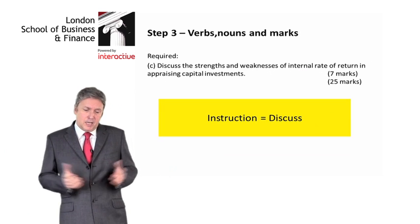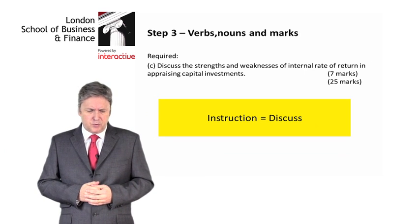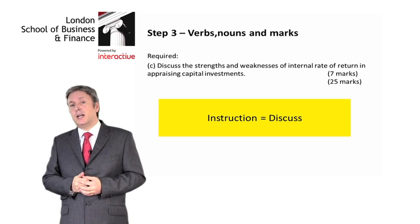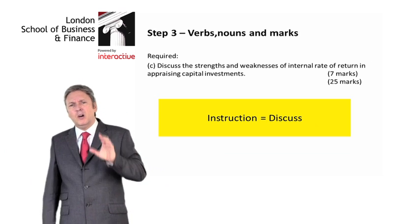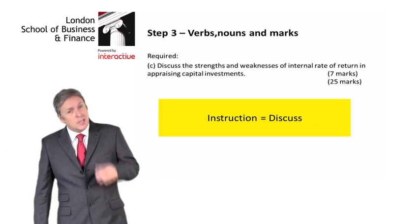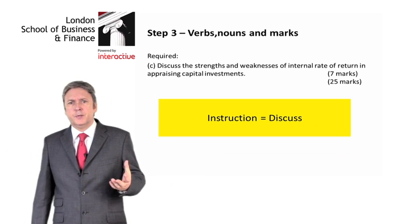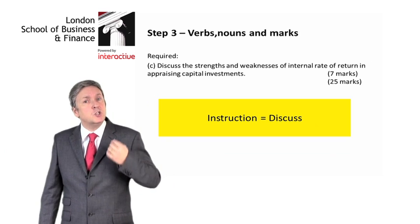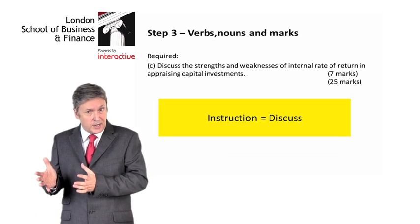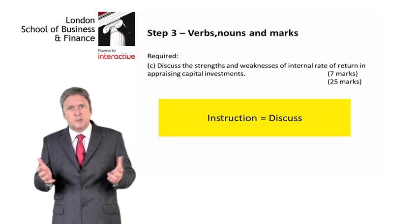Step 3 — this is where things get slightly more exciting. The instruction: 'Discuss the strengths and weaknesses of internal rate of return in appraising capital investments.' What does 'discuss' mean? You have to understand precisely what you're being asked to do. Discuss normally means talk about a range of different elements focusing with regard to the subject — here, strengths and weaknesses of IRR in investment appraisal.